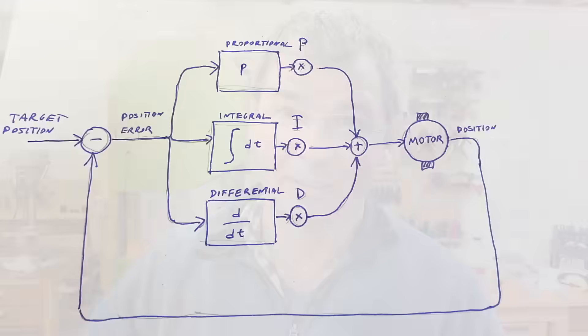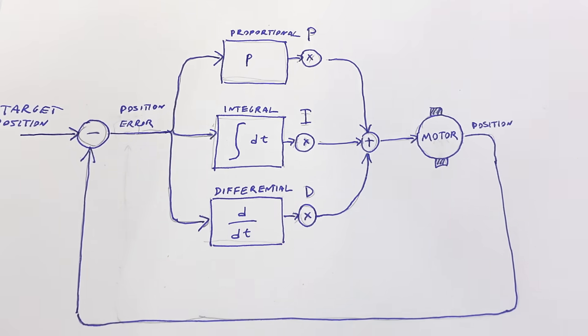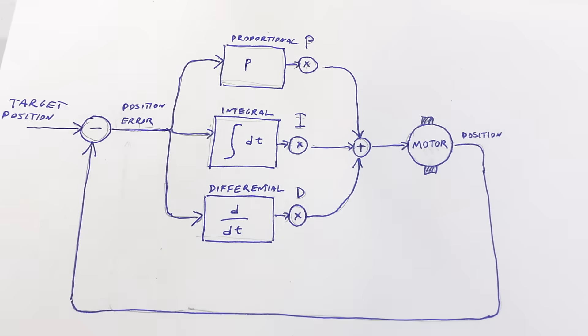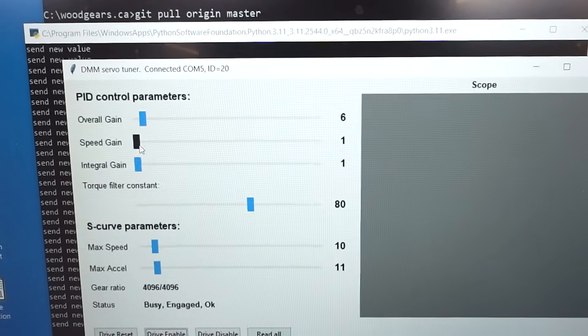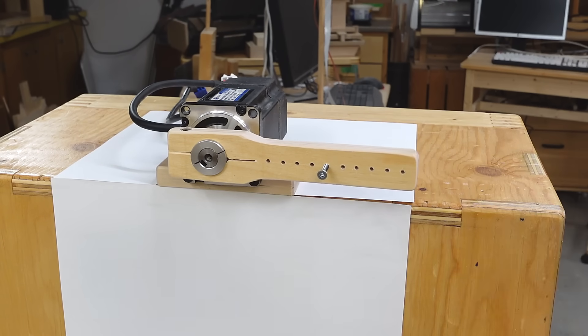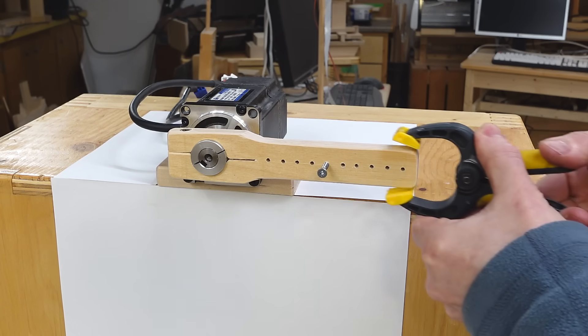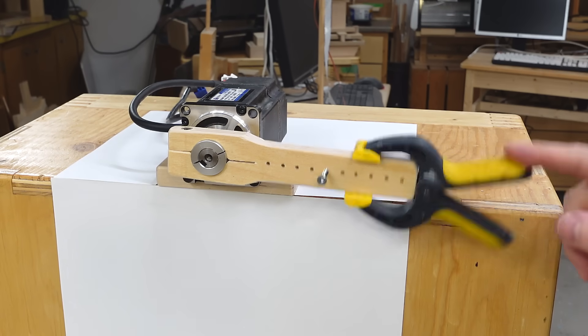If we're approaching an intersection in a car, we don't want to overshoot, so depending on how fast we're going we apply the brakes before we reach the stop line. This is where the differential term comes in — it basically adds speed to our position so it anticipates where we're going to be and stops earlier. On the DMM servo this is called speed gain. Setting it to maximum, if I force the motor off position and let it shoot back, it doesn't overshoot, though it seems slightly sluggish. Even with more inertia it doesn't overshoot like crazy.